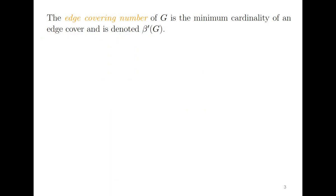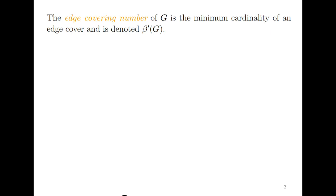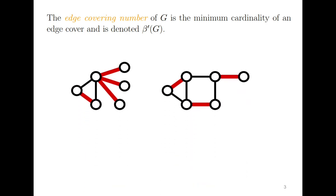The edge covering number, which is denoted as β'(G), is the minimum cardinality of an edge cover. For these graphs, you can see that for the first one, β'(G) is equal to four, and for the second one, β'(G) is equal to three.